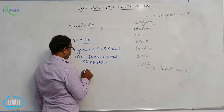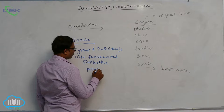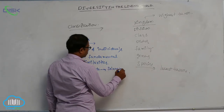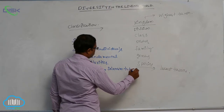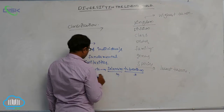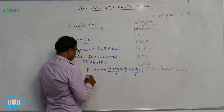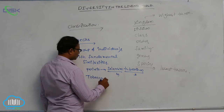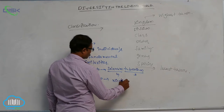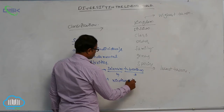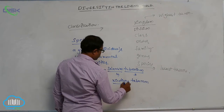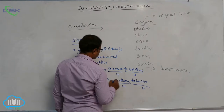For example, potato — Solanum tuberosum. In this, tuberosum is the species and Solanum is the genus. Next, tobacco — Nicotiana tabacum. In this, Nicotiana is the genus and tabacum is the species.